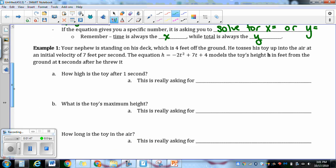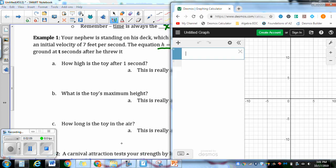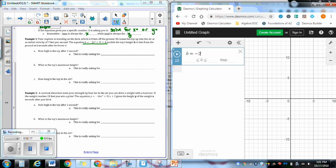So I have the first example here. Your nephew is standing on his deck, which is four feet off the ground. He tosses his toy up into the air at an initial velocity of seven feet per second. It says the equation, so I'm just going to underline that. It models the toy's height h in feet from the ground at t seconds after he threw it. So the first thing I'm going to do is put this into Desmos, and I'm going to try and juggle this so I can get everything on my screen at once. h equals negative 2t squared plus 7t plus 4.